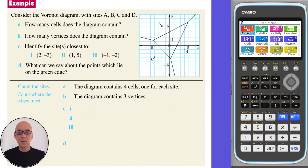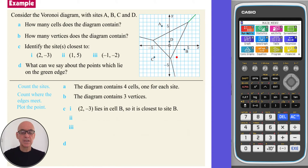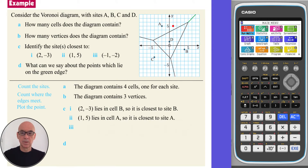In part C, we are asked to identify the site closest to the point (2, −3). Plotting the point, we see that (2, −3) lies in cell B, so it is closest to site B. Plotting (1, 5), we see that it lies in cell A, so it is closest to site A.